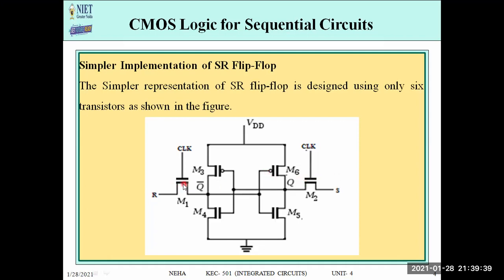Where are the remaining two NMOS? They are used as clock-controlled switches. M1 is used with the clock and is given the R input. Similarly, M2 is used with the clock and is given the S input. M5 and M6 form another inverter — M5 is PMOS and M6 is NMOS — and we get the output Q from the center node.